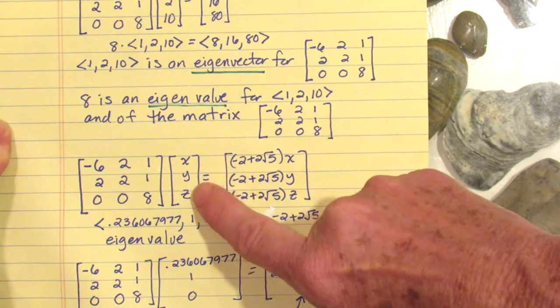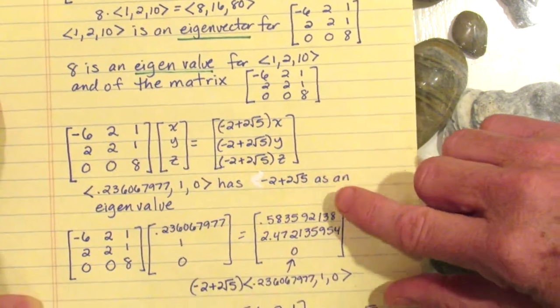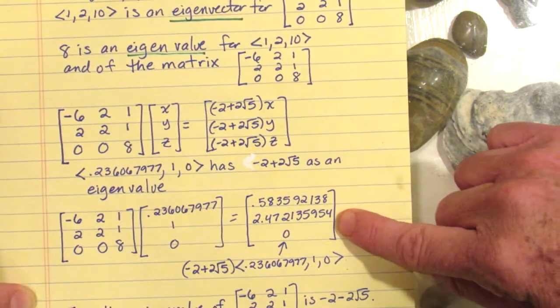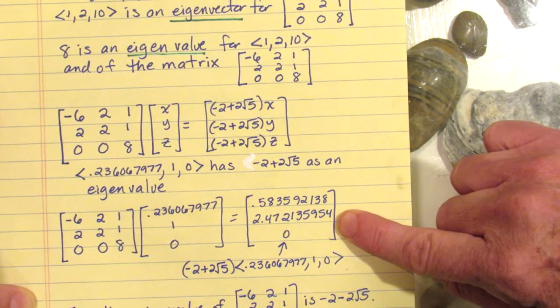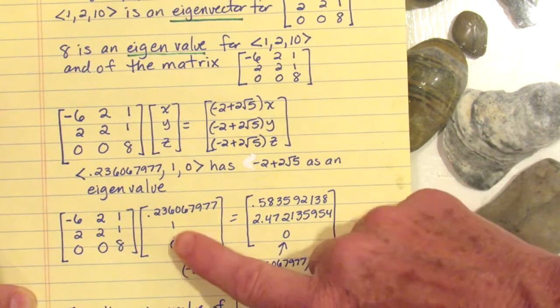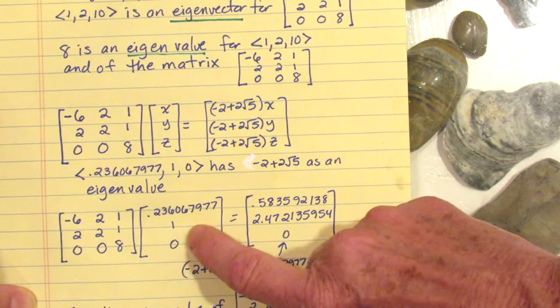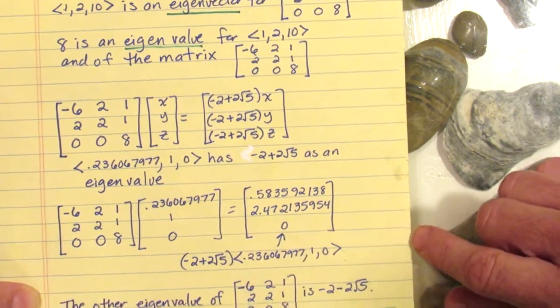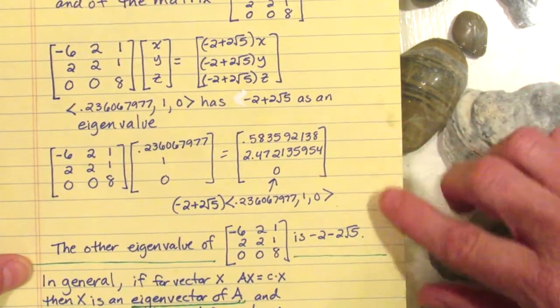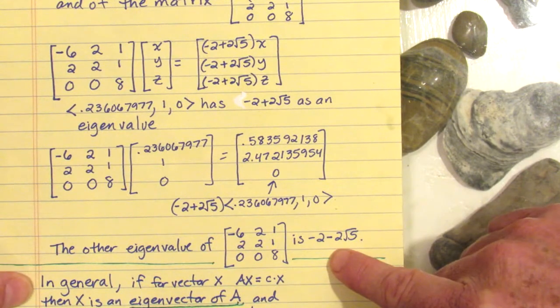If we plug that in for x, y, z, we actually get a vector that is negative 2 plus 2 times the square root of 5 times that vector. The other eigenvalue for this particular matrix is the conjugate: negative 2 minus 2 times the square root of 5.